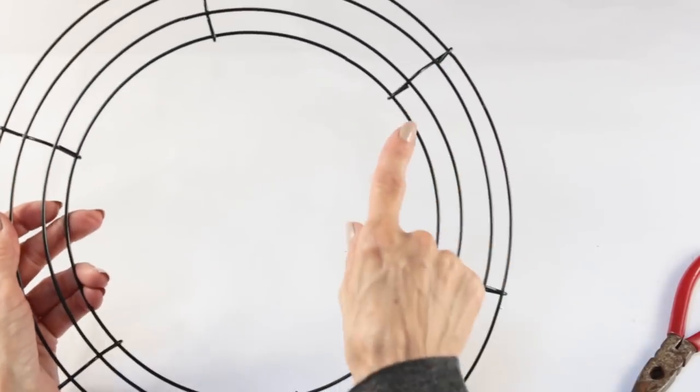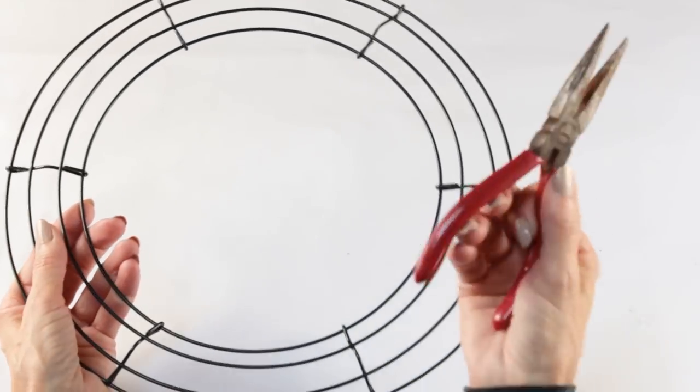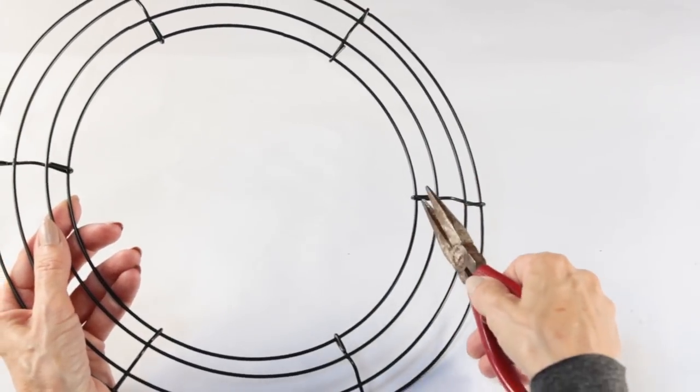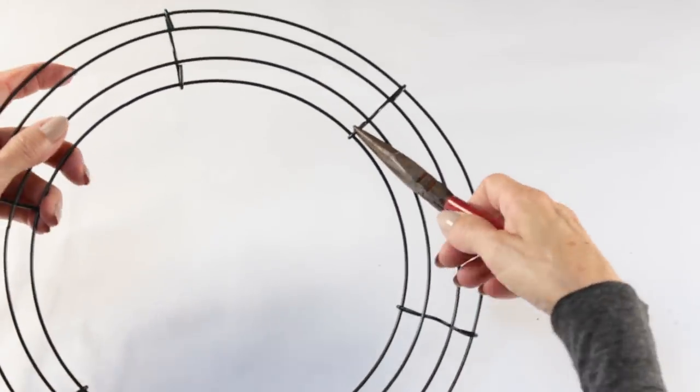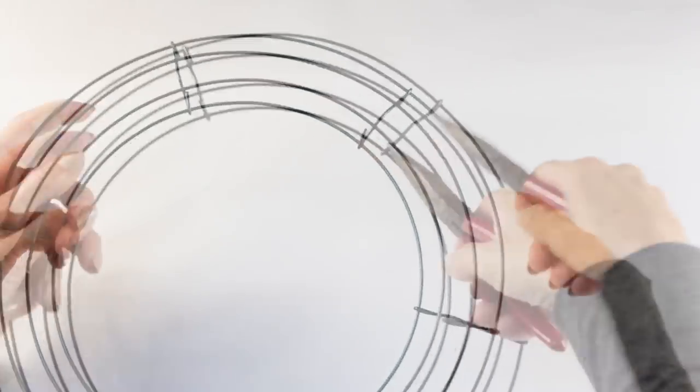Using our pliers we're going to open the ends of all six of the center supports. I just slipped the end of the pliers in like the little metal loop and then I just kind of worked it open.